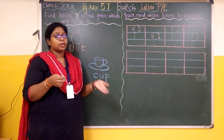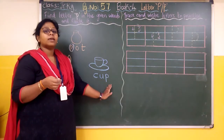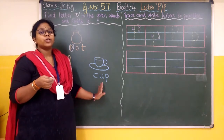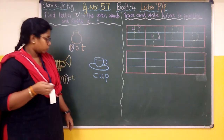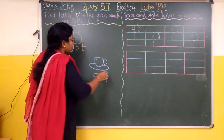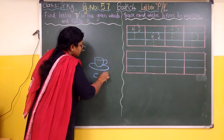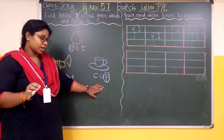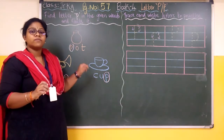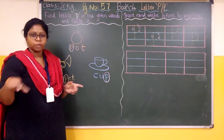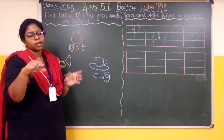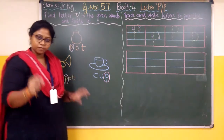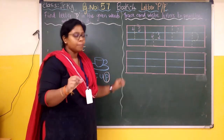Now the next one is 'cup' — C-U-P, cup. So you have to circle the P. In the same way you will finish that full page, circling the letter P neatly.